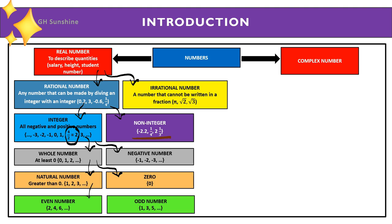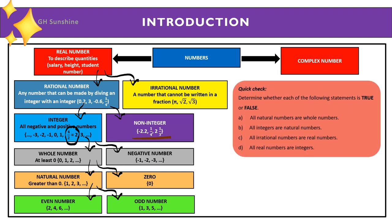Let's try a quick check question. Determine whether each statement is true or false. First question: all natural numbers are whole numbers. Looking at the diagram, natural numbers fall within whole numbers, so the answer is true.